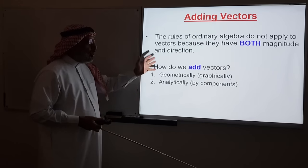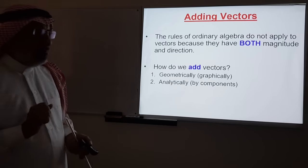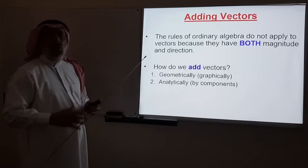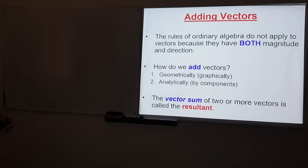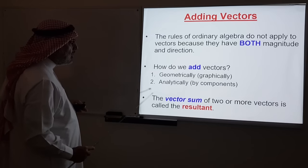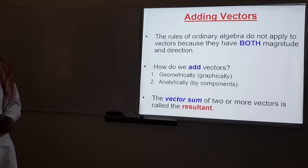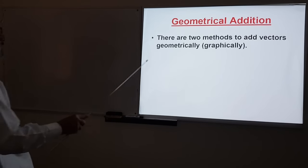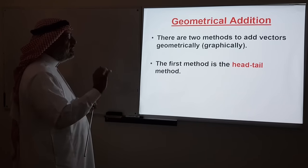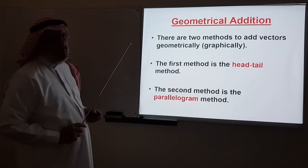The rules of ordinary algebra do not apply to vectors because they have both magnitude and direction. There are two ways to add vectors: a graphical way and a mathematical way. The first method is the geometrical or graphical method, where you draw vectors on paper and add them graphically. The second is the analytical method, where you resolve the vector into its components and add them mathematically. The vector sum of two or more vectors is called the resultant.